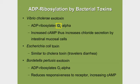Alpha S is supposed to stimulate adenylyl cyclase to make cyclic AMP. By stimulating the stimulator, we make more cyclic AMP. As a result, it increases chloride secretion in the mucosal cells. E. coli toxin works very similarly to cholera toxin, causing traveler's diarrhea.